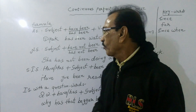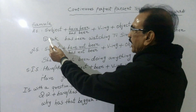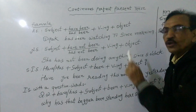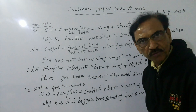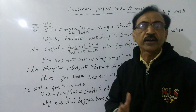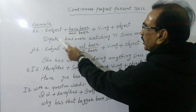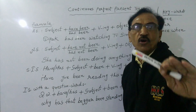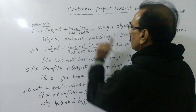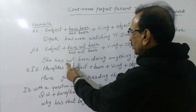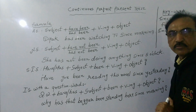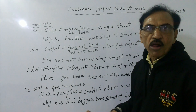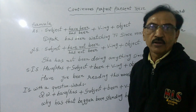Is it clear? Remember this formula. Now, affirmative sentence: 'Deepak has been watching TV since morning.' He started watching TV in the morning, at present he is watching TV, and he may continue watching till the moment he feels tired. Deepak is third person singular, that's why I have used 'has been.' If I, we, you, they, or any plural noun is the subject, we have to use 'have been.' In negative sentence: 'She has not been doing anything since 5 o'clock.' She is simply sitting idle, she is doing nothing — since 5 o'clock she has stopped doing anything.